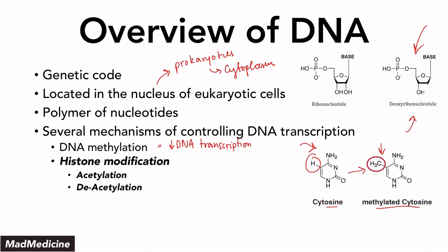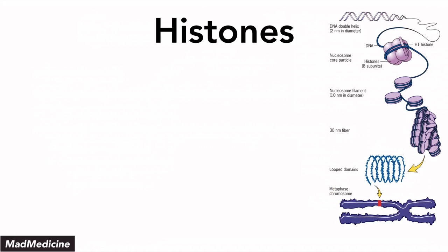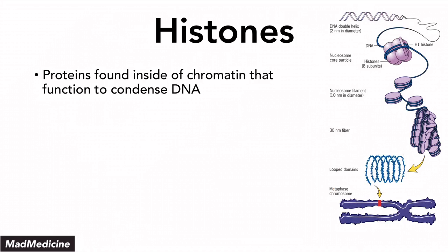The other type of mechanism for controlling DNA transcription is histone modification, specifically acetylation and deacetylation. This is what we're going to be discussing today. Before we do that, however, we need to discuss what histones are.